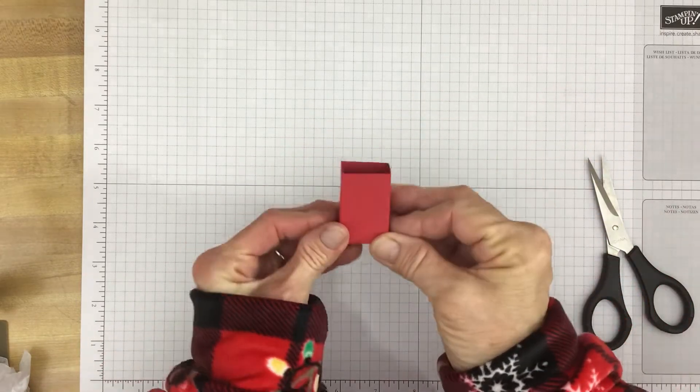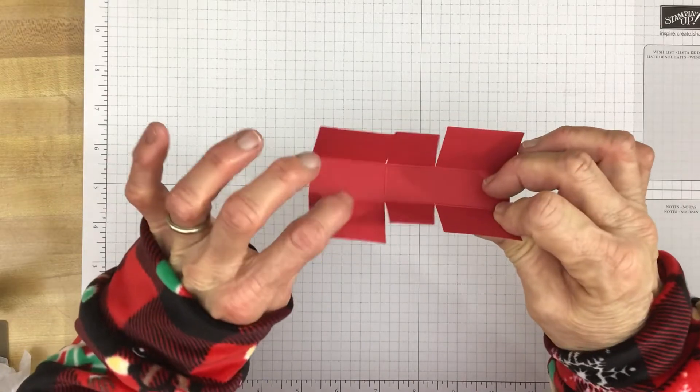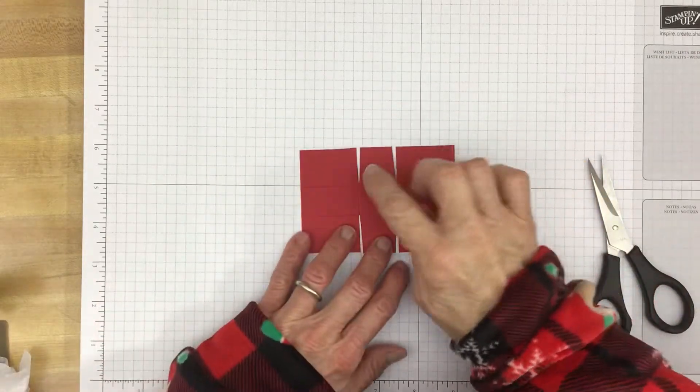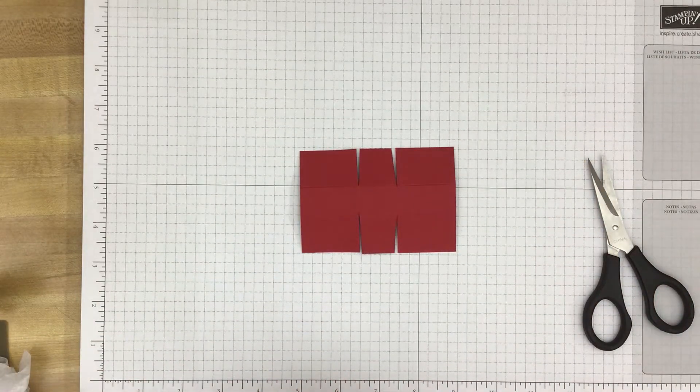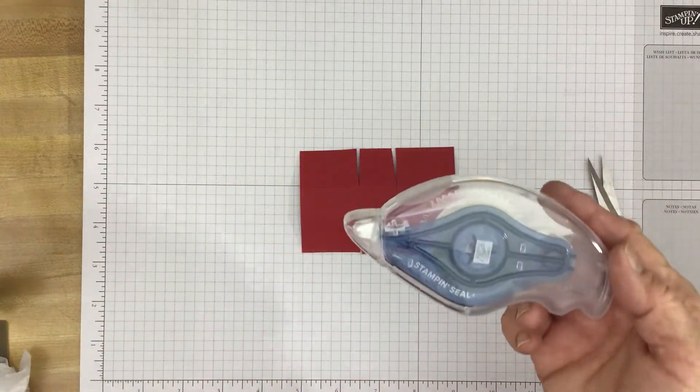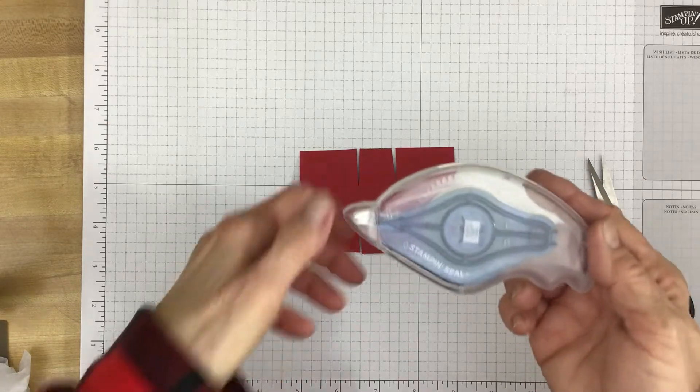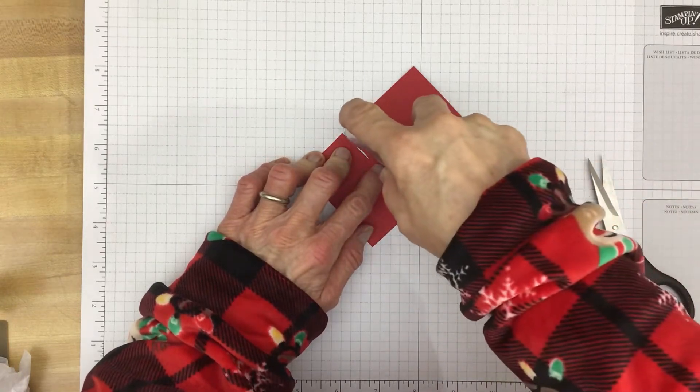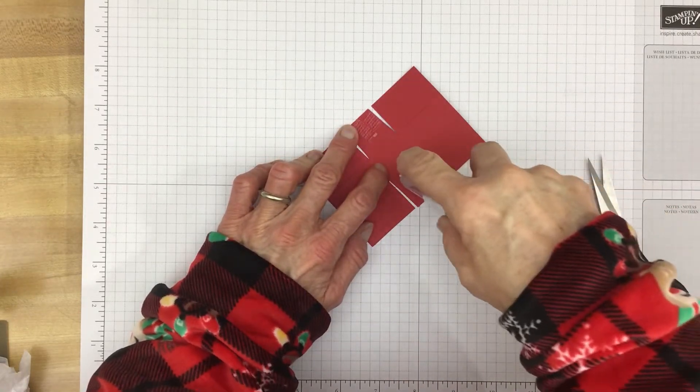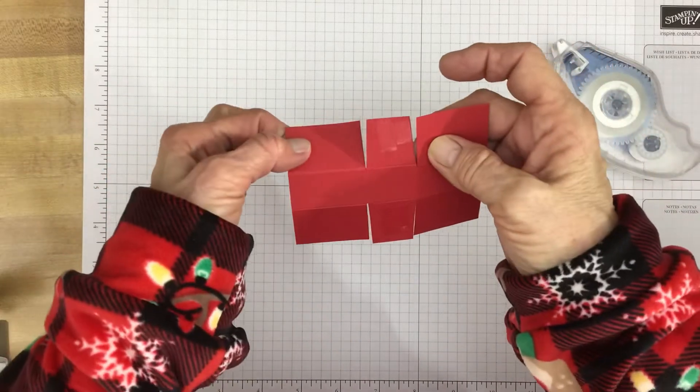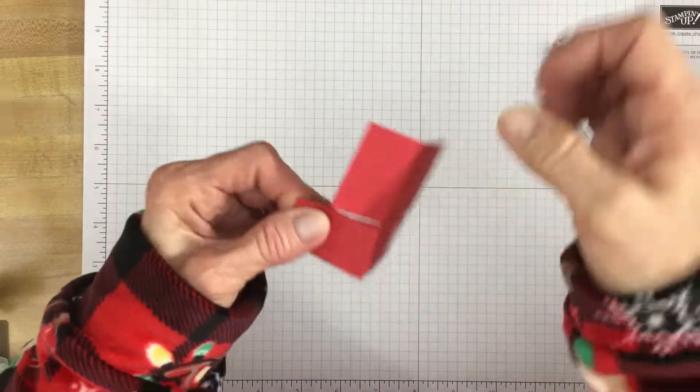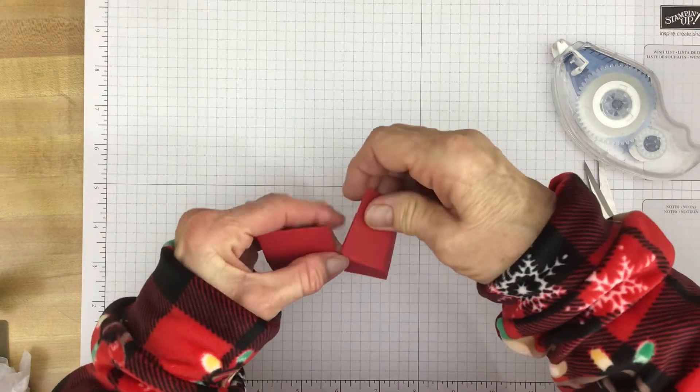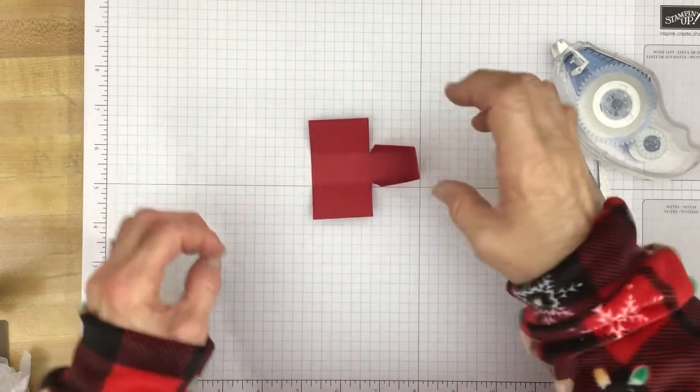This is how we're going to be putting it together. Okay so these are the ones that I trimmed a little bit. First of all we want to, this is the right side, we want to put some adhesive on here. And I'm going to use my Stampin' Seal Plus but you can use glue dots, you can use the tear and tape, you can use whatever you care to use. And then the sides that I cut the little piece off of, just bring that up. And then we'll do it again on this side.